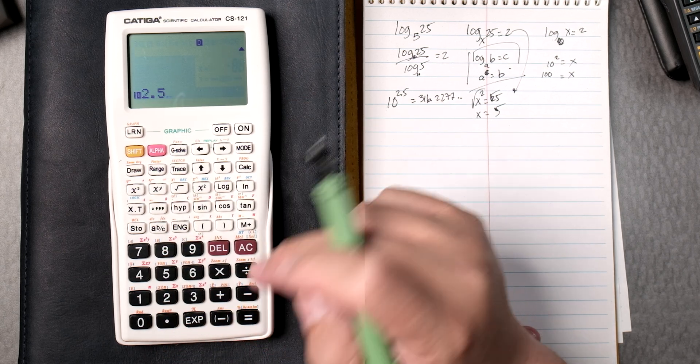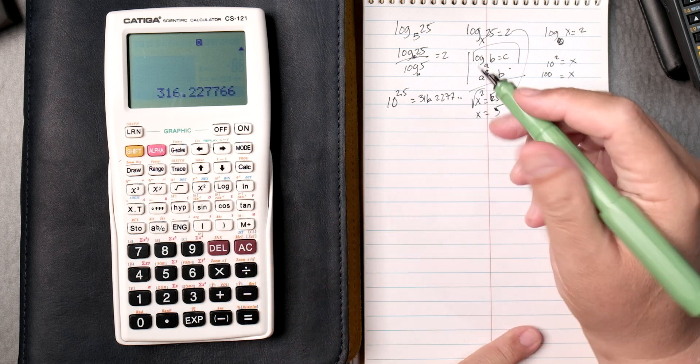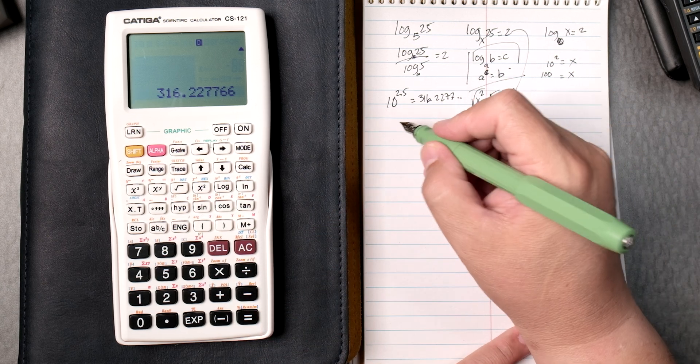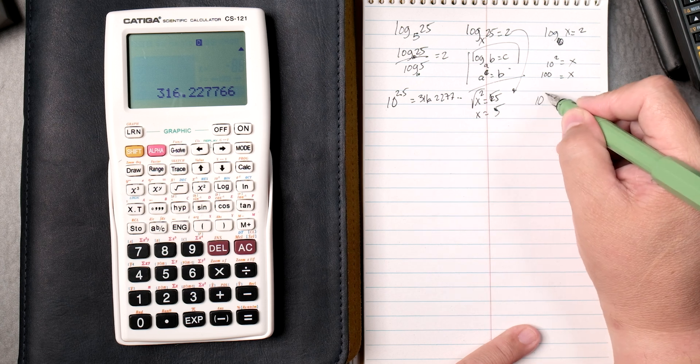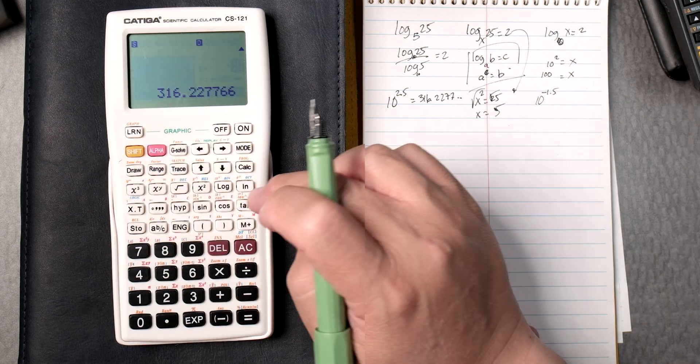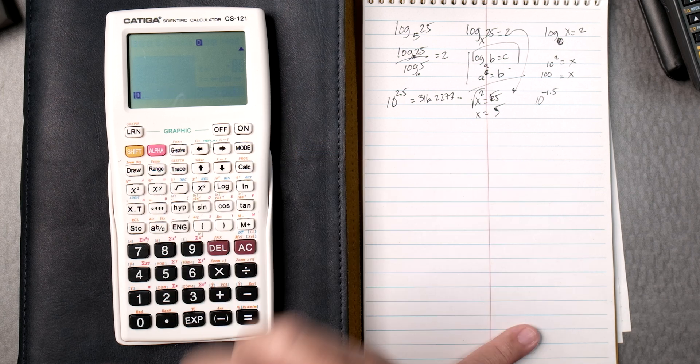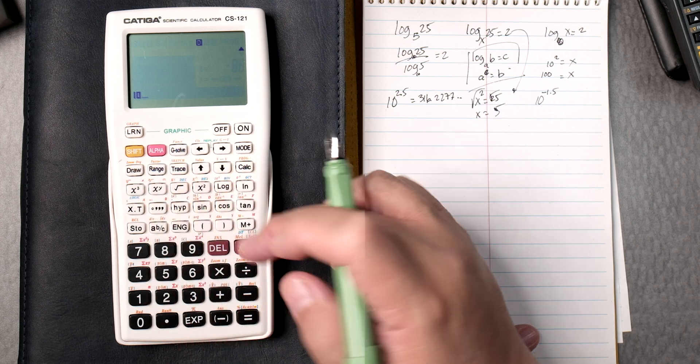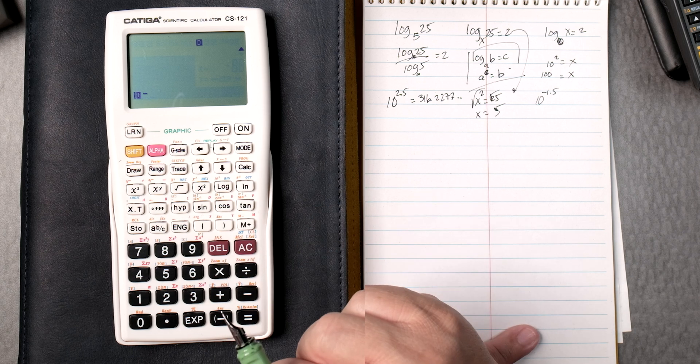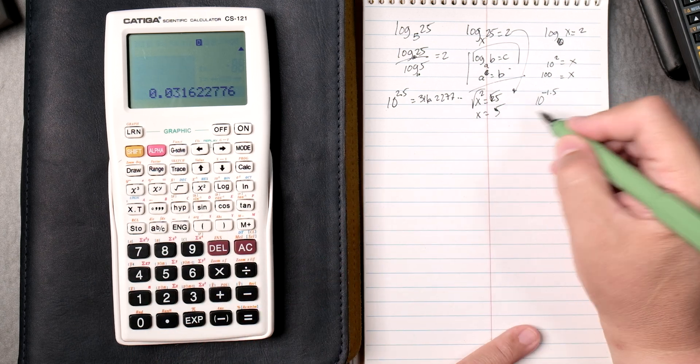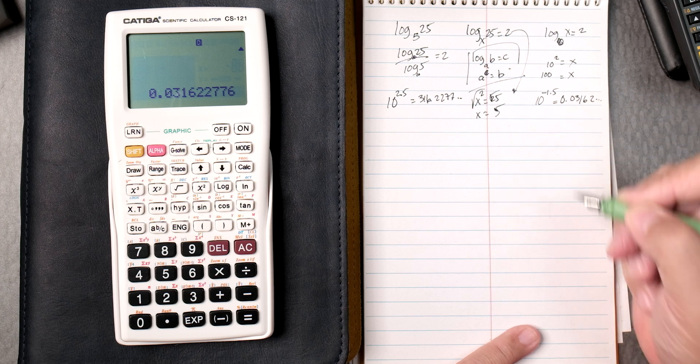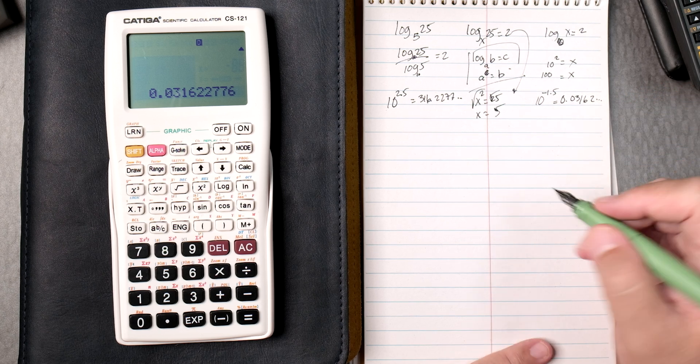The notation doesn't look that great on this calculator but okay, press equals and gives you the same answer. All right, how about 10 to the negative 1.5? Same thing, shift and then the log button that gives you 10, plus or minus key which is right here, negative 1.5 equals, and that gives you 0.03162 and so forth. That looks good.